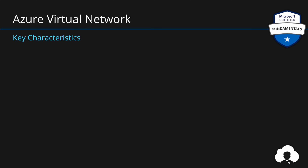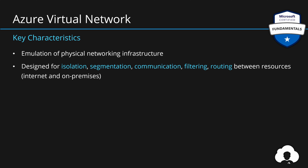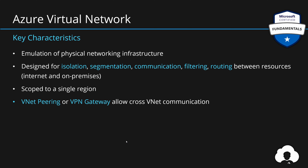To summarize: Azure Virtual Networks is an emulation of a physical network infrastructure in the cloud, designed to allow customers isolation and segmentation of their network, and to enable communication filtering and routing between Azure and on-premise resources. Remember that virtual networks are scoped to a single region, so in multi-region architecture you will have multiple virtual networks, which you can connect using either VNet Peering or VPN Gateway. Segmentation is achieved using subnets.